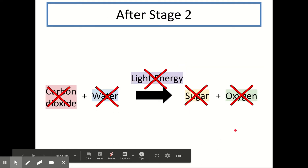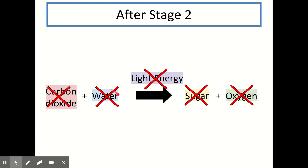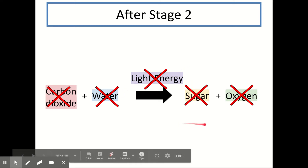After stage 2, you can see that we've managed to mention all parts of our word summary. That's really important. If you're doing an extended response question on photosynthesis, I would highly suggest writing out the summary so that you can tick off each of these as you go to make sure you've covered them all.